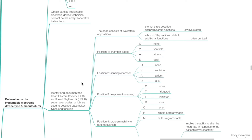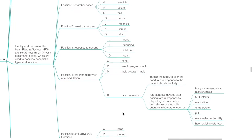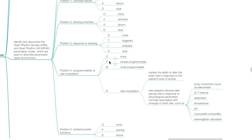Position 1 — chamber paced — may be O (none), V (ventricle), A (atrium), or D (dual). Position 2 — sensing chamber — may be O (none), V (ventricle), A (atrium), or D (dual). Position 3 — response to sensing — may be O (none), T (triggered), I (inhibited), or D (dual). Position 4 — programmability or rate modulation — may be O (none), P (simple programmable), M (multi-programmable), or R (rate modulation). Rate modulation implies the ability to alter the heart rate in response to the patient's level of activity. Rate adaptive devices alter the pacing rate in response to physiological parameters such as body movement, QT interval, respiration, temperature, pH, myocardial contractility, and hemoglobin saturation.